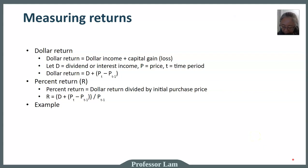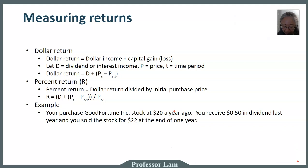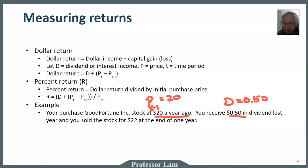Let's go over an example. You purchased a stock a year ago for twenty dollars, so P(t−1) equals twenty dollars. You received fifty cents in dividends, so D equals fifty cents. You then sold the stock for twenty-two dollars at the end of the period, so P(t) equals twenty-two dollars.